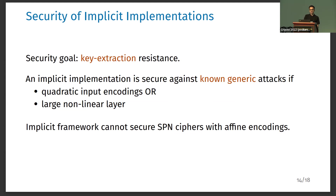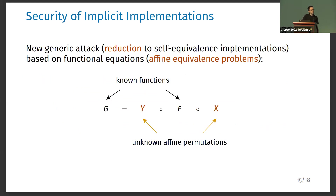The full analysis is in the paper, but to summarize the conclusion: if an implicit implementation uses a non-linear input encoding such as quadratic input encodings, or the non-linear layer of the cipher is given by a large function — not the concatenation of small S-boxes — then all known generic attacks fail against this implicit implementation. However, this analysis also shows that this method cannot secure SPN ciphers like AES if one only uses affine encodings. One would need to choose another cipher with a large non-linear layer like the permute modular addition, or choose non-linear input encodings. Previous attacks mainly don't work against this method because they mainly exploit that encodings are of small size.